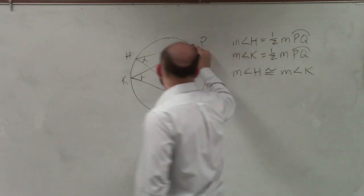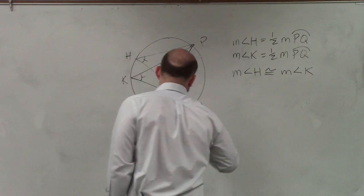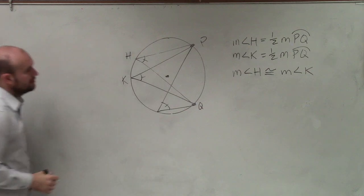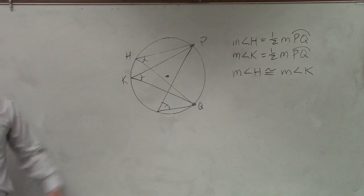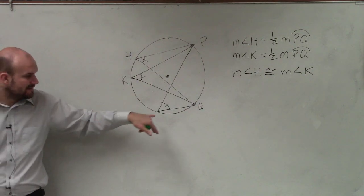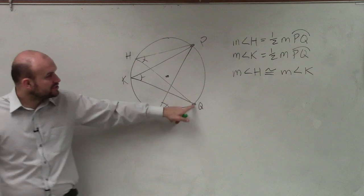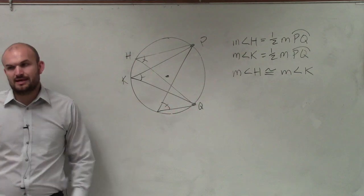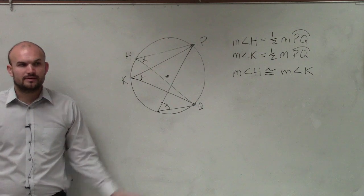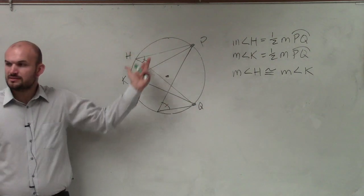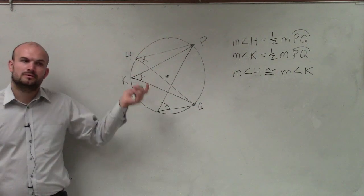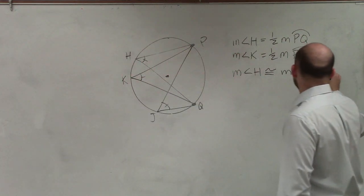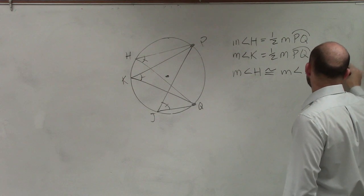It doesn't matter where I make my inscribed angle. As long as my inscribed angle has a point on the circle and the two endpoints of the arc, all of your angles are going to be the same. We could call that J, and that's also equal to the measure of angle J.